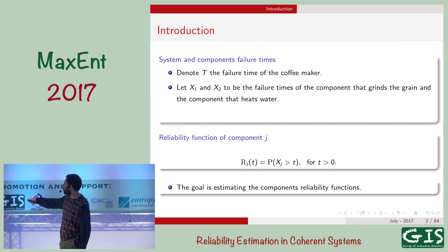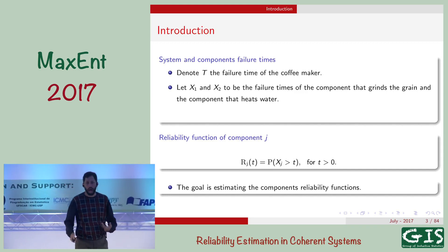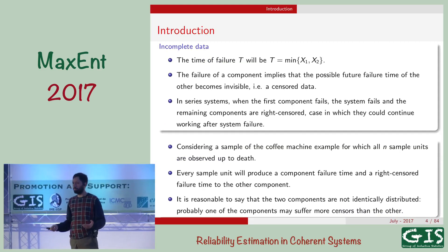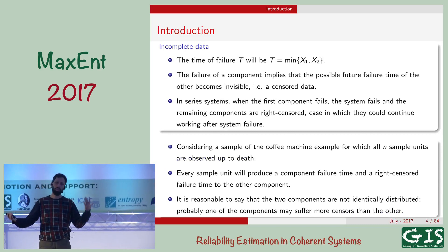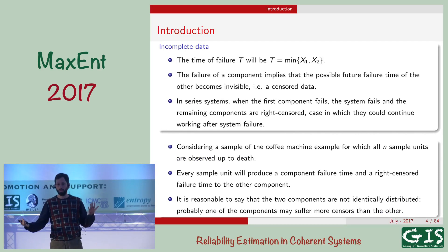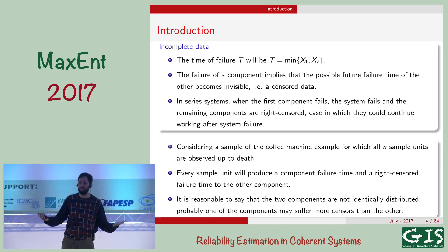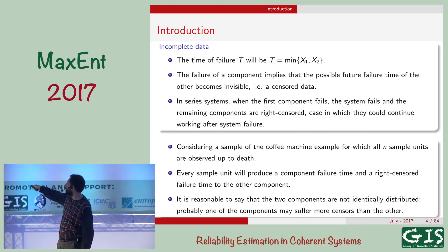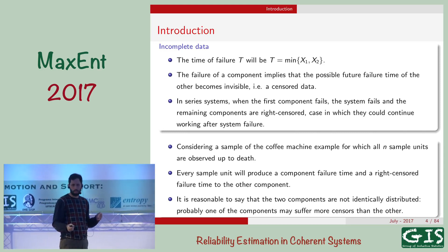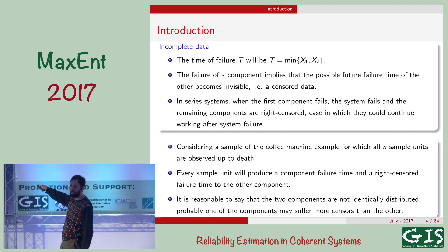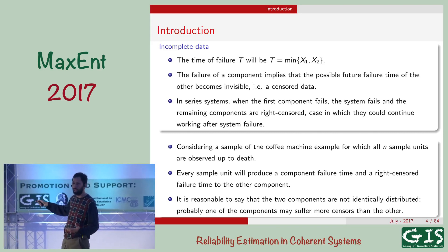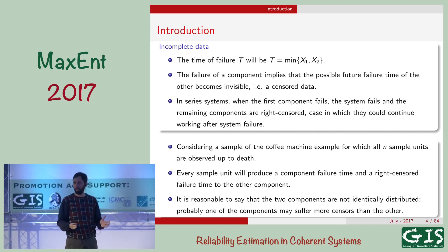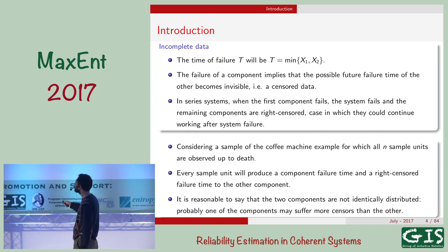We will mainly work based on this reliability function. Our interest is: am I able to estimate this function based on data of the system? If one component fails, I have a second component whose failure time I don't know, because the system already failed. The first component produces the failure of the system, so the time of the system in this case is just the minimum. And generally, we have hidden information — we cannot observe x1 or x2 individually. We only have information about t, the failure time of the system.